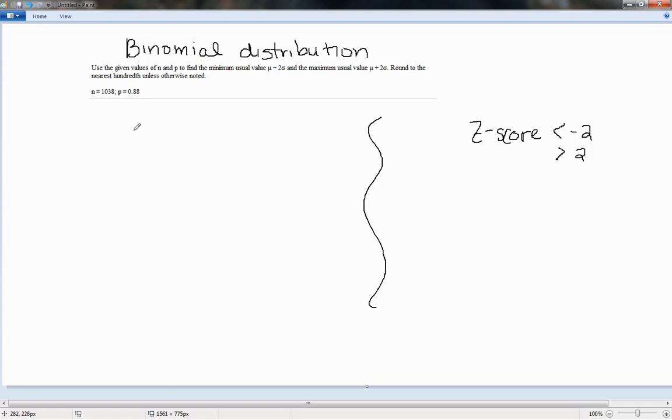Now we can do this for a binomial distribution really pretty easily. So remember for a binomial distribution, the mean is equal to n times p and the standard deviation is equal to the square root of n times p times q, where q is always equal to 1 minus p.